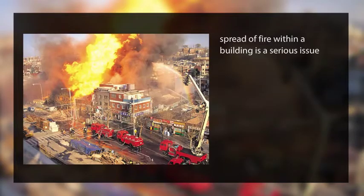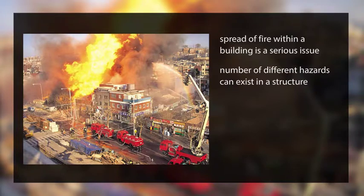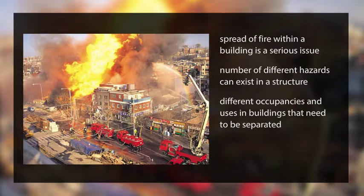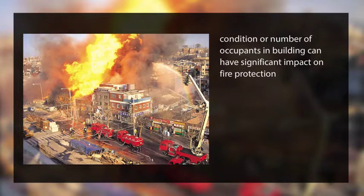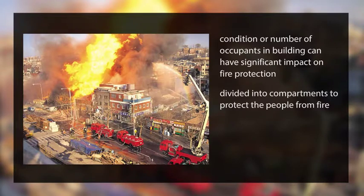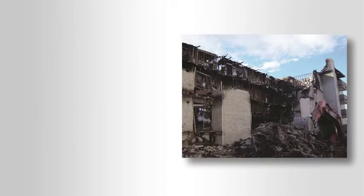The spread of fire within a building is a serious issue. A number of different hazards can exist in a structure. There may be different occupancies and uses in buildings that need to be separated from each other. The condition or number of occupants in a building can also have a significant impact on fire protection. The building may need to be divided into compartments to protect the people from a fire event.